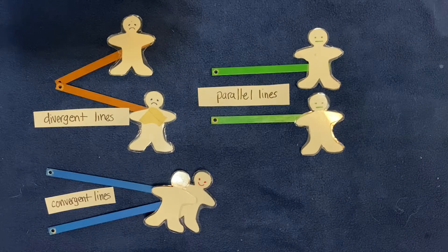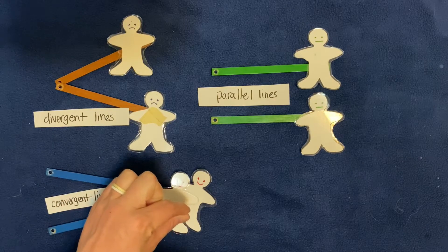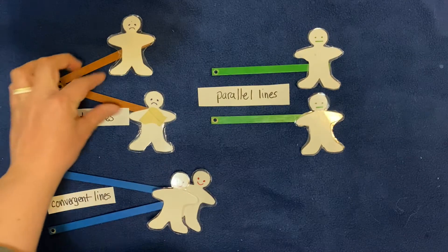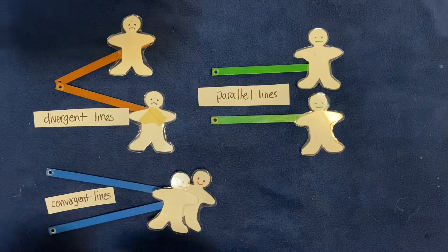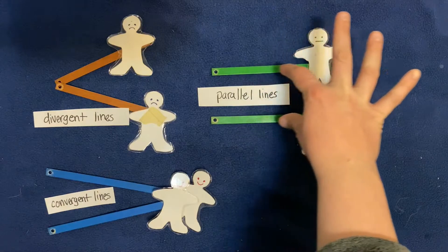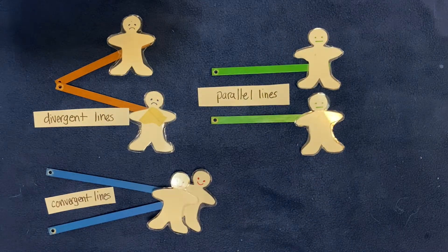So convergent lines, converge means to come together. Diverge means to go apart. You see that root word verge, vergent in there? And then parallel lines just run right next to each other forever. They don't ever come in contact and they're perfectly straight.